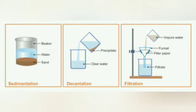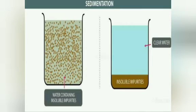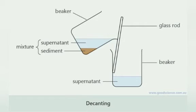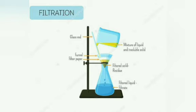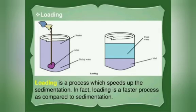To separate solids from liquids, there are various techniques. The first is sedimentation — you let the mixture stand for some time, like muddy water, and the mud will settle down. Next is decantation — you pour the clear water out. Then you have filtration — if you use a filter paper and pour the muddy water, all the residues remain on the filter and you get the filtrate, the pure liquid. Next, you can have loading, which speeds up the separation process — you add alum to the muddy water so that the mud gets separated very easily.